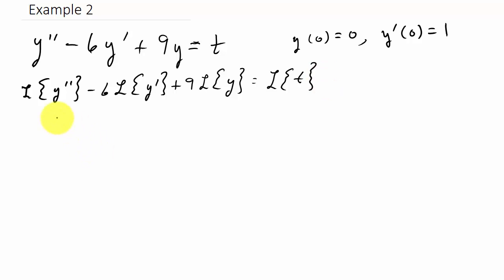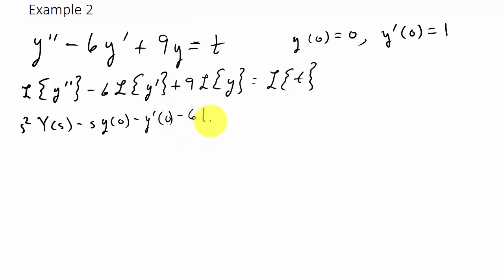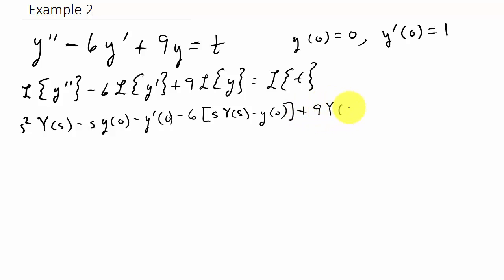For y double prime, that's going to be s² Y(s) minus s·y(0) minus y'(0), minus six times — in parentheses — s·Y(s) minus y(0), plus nine·Y(s), and that equals the Laplace transform of t.